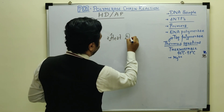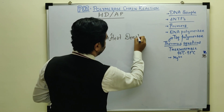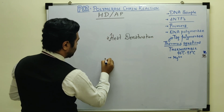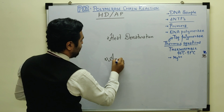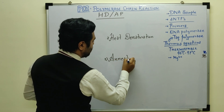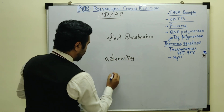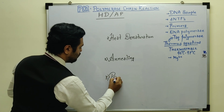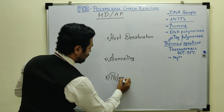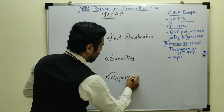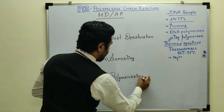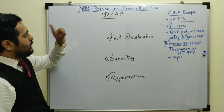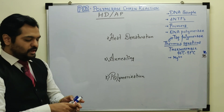The first step is heat denaturation. Then we will move to the second step that is known as annealing. And the third step we are going to call polymerization, also referred to as extension. With this third step, the complete cycle of PCR will be completed.